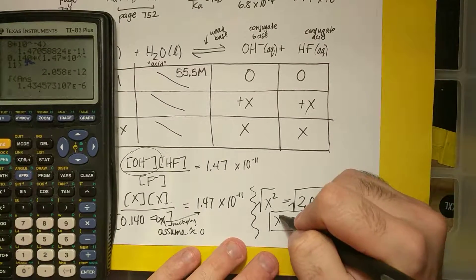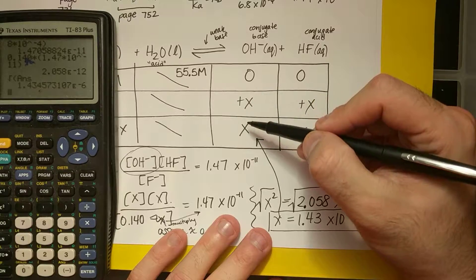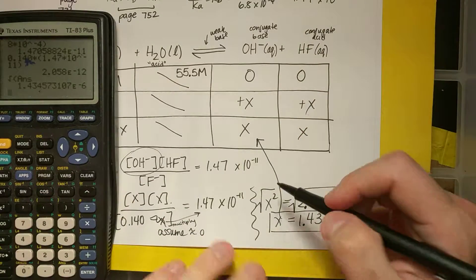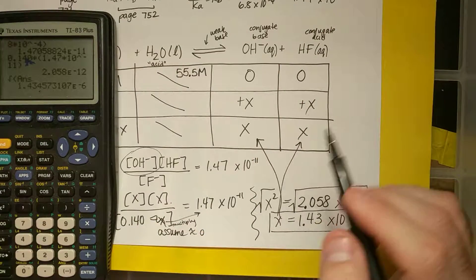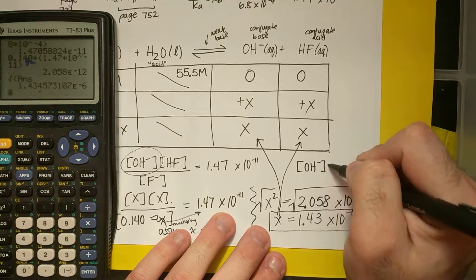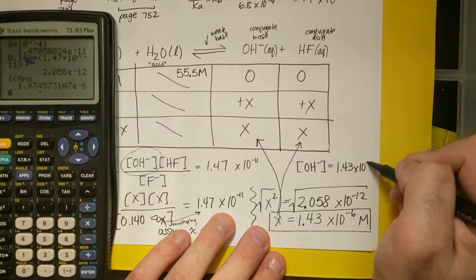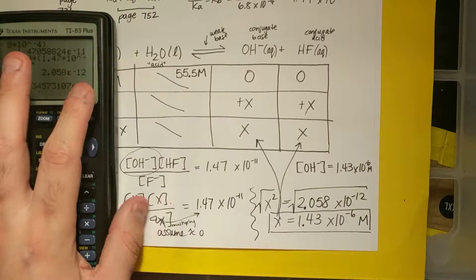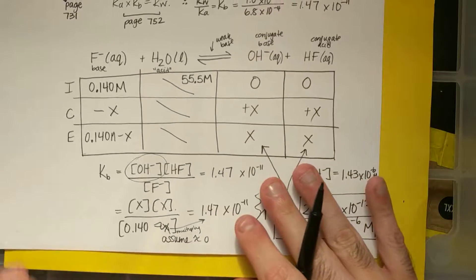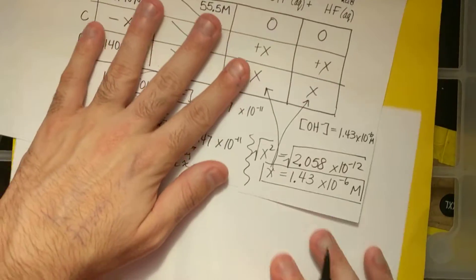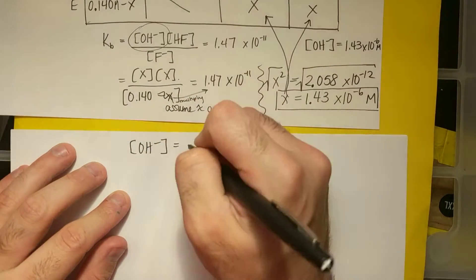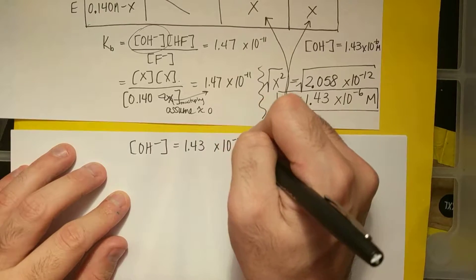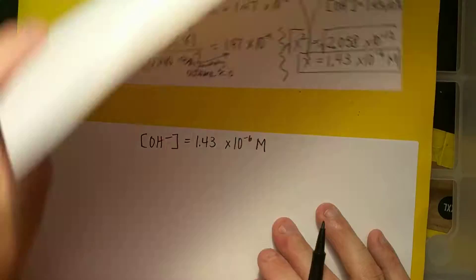Now what does this number mean? This number X is my concentration for OH⁻. So boom, we answered half the problem. It's also my concentration of HF, but we don't really need that for this problem. So I have my concentration of OH⁻. That is equal to 1.43 times 10 to the minus 6 molar. Now maybe you know now how to do pH and POH, but I'm going to go to a separate page. My concentration of OH⁻ that we solved for, that's equal to 1.43 times 10 to the minus 6 molar. I'm going to write that at the top of the page now.